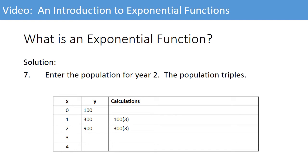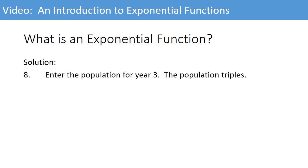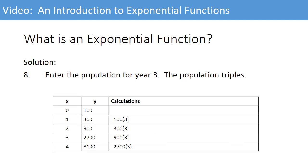Now, the population for year three. Again, remind yourself, the population triples. So 900 will go to 2,700. And while we're here, let's do year four. 8,100 will be 2,700 tripled. And you notice we show our calculations to see how we derive or obtain the answer.